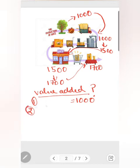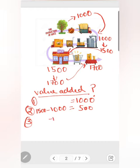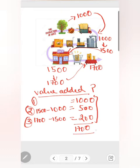The factory owner purchased mangoes for rupees 1000 and sold juice for rupees 1500, so the value added by the factory owner is rupees 500. The shopkeeper purchased juice for rupees 1500 and sold it for rupees 1700, so the value added by the shopkeeper is rupees 200. Adding all these value added amounts gives us 1700, which is equal to domestic income or GDP at MP.